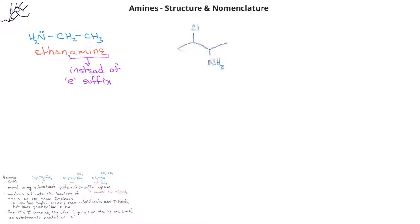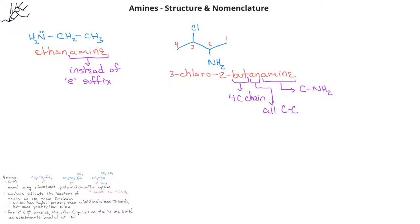In the second example, we have a chlorine substituent group and an amine functional group. Since the amine takes priority for numbering, we would number from right to left, and the name of this compound would be 3-chloro-2-butanamine.